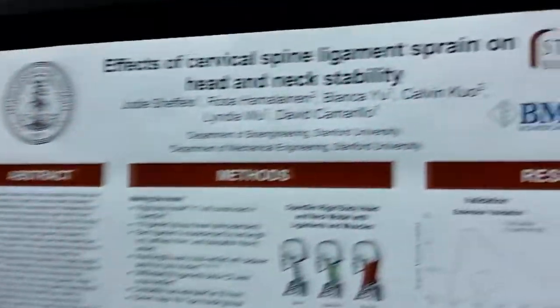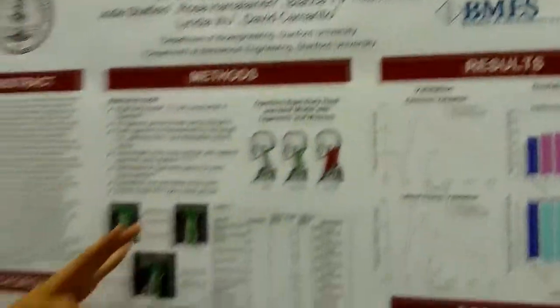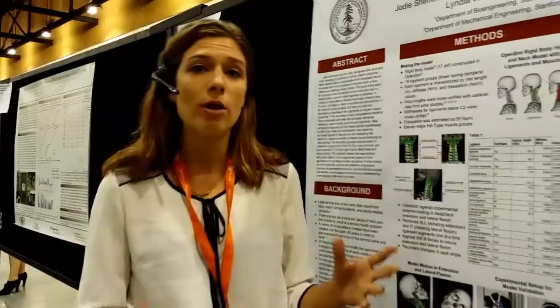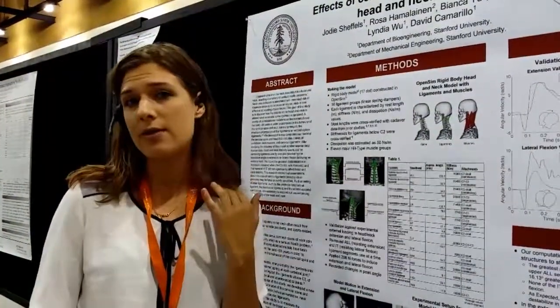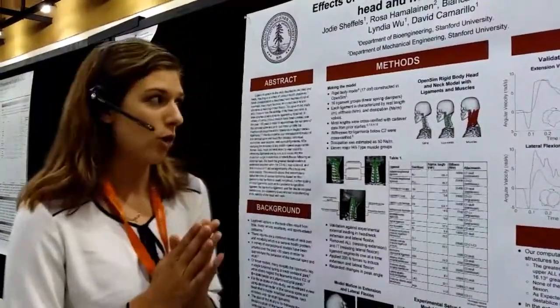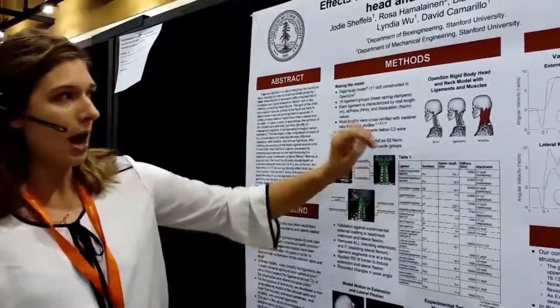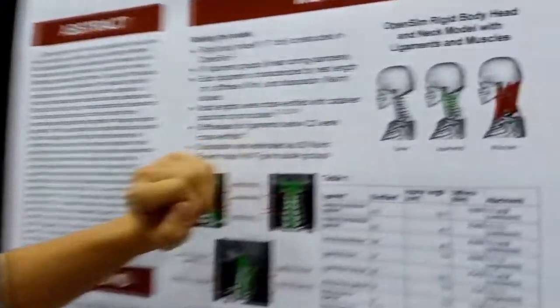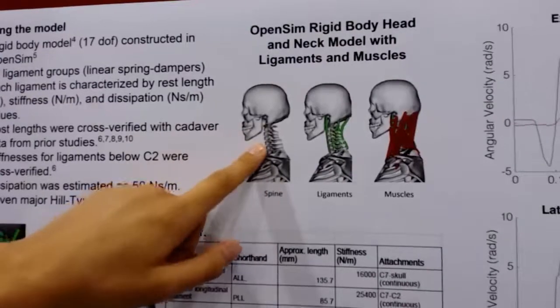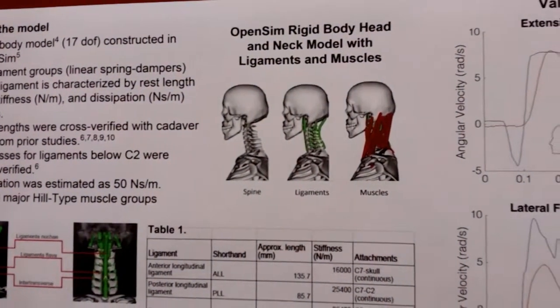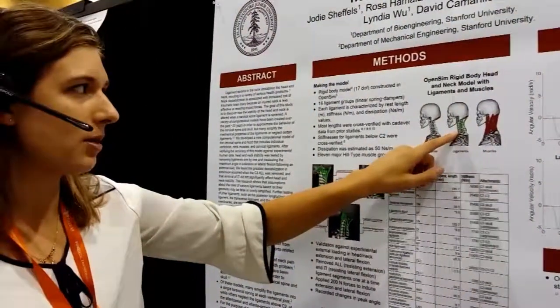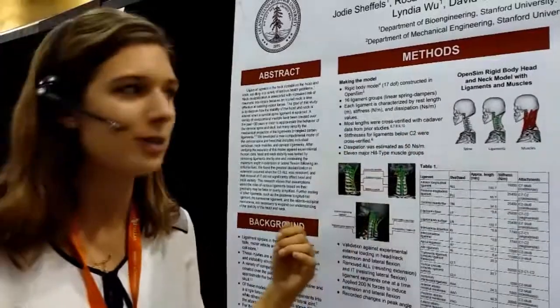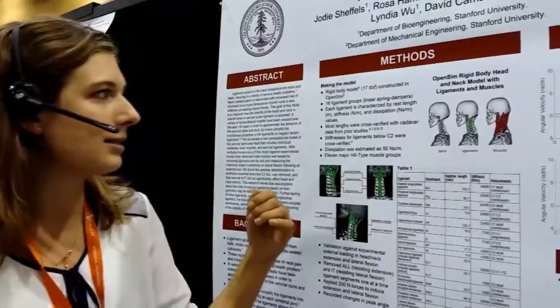Although there have been many computational models looking at the spine and the head, no model so far has taken into account both the muscles in the neck and also the cervical ligaments. So what we did is we created a model that models each vertebrae as a rigid body. There are 17 degrees of freedom, taking into account both rotational and linear degrees of freedom. We created 16 ligament groups modeled as linear spring dampers, and we looked at the muscles modeled as classic Hill-type muscle groups.